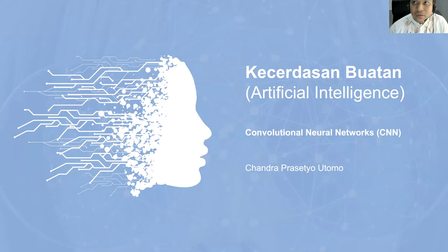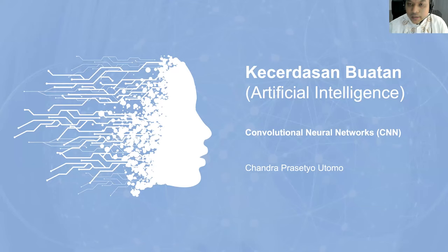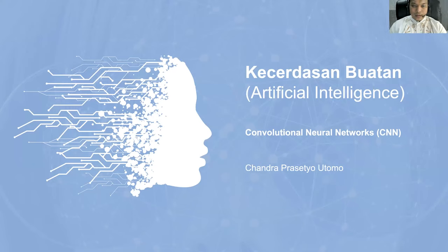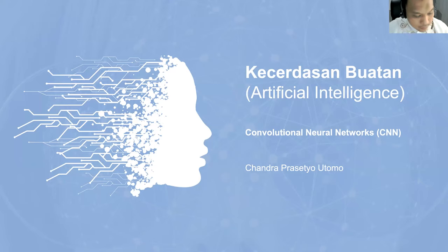Di sekitar tahun 2015-2016 ketika mereka membuat sebuah sistem namanya AlphaGo, untuk bermain game Go. Go itu jauh lebih komplikatif dibandingkan dengan catur. Mereka bisa membuat sebuah game tersebut yang bisa menang dari seorang Grandmaster — itu sangat incredible. Yang dipakai di sana adalah kombinasi antara Convolutional Neural Network dengan reinforcement learning. Jadi kita akan pelajari salah satu building blocks yaitu Convolutional Neural Networks.